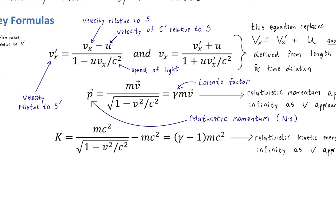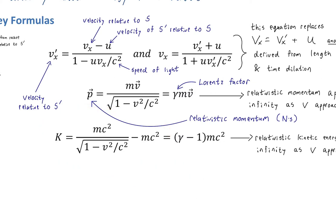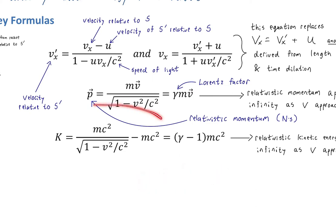What we will show is what happens when V is much, much smaller than C. If we take V much less than C and plug it into the relativistic kinetic energy equation, we get back classical kinetic energy — one-half mV squared. Although we don't have a full derivation here, this gives confidence that the equation is consistent with the classical laws we're used to.